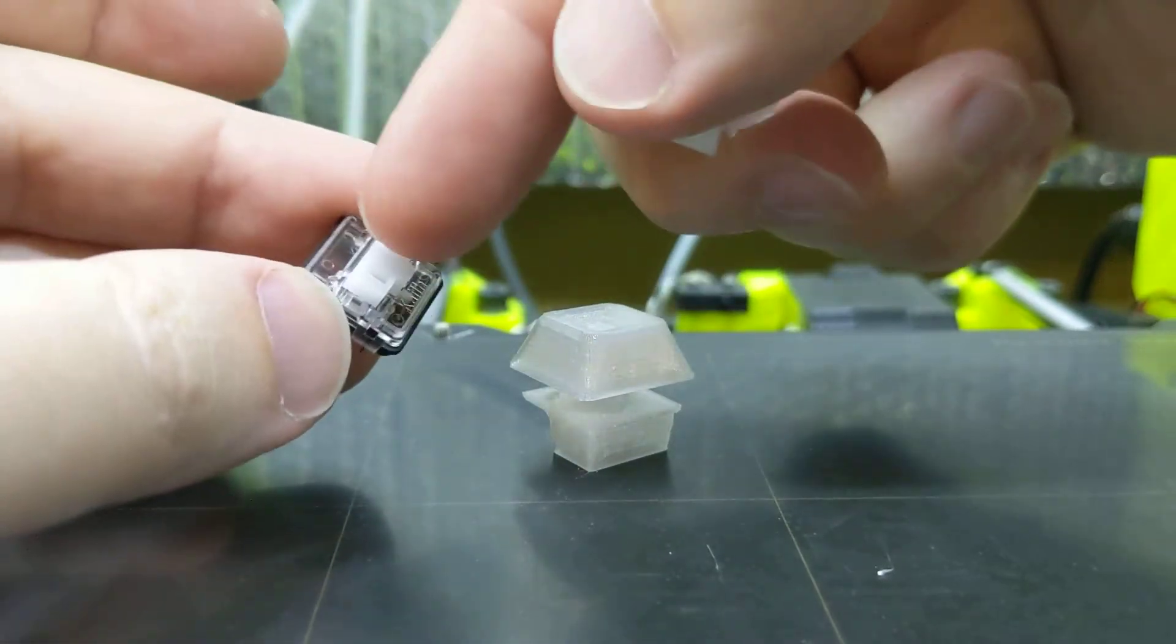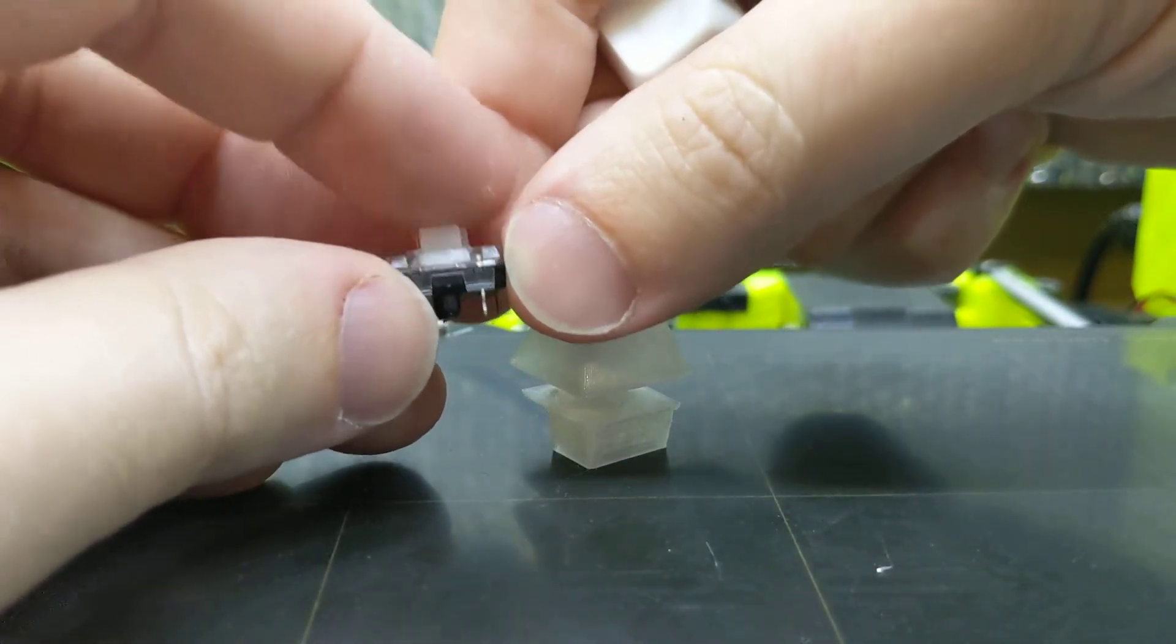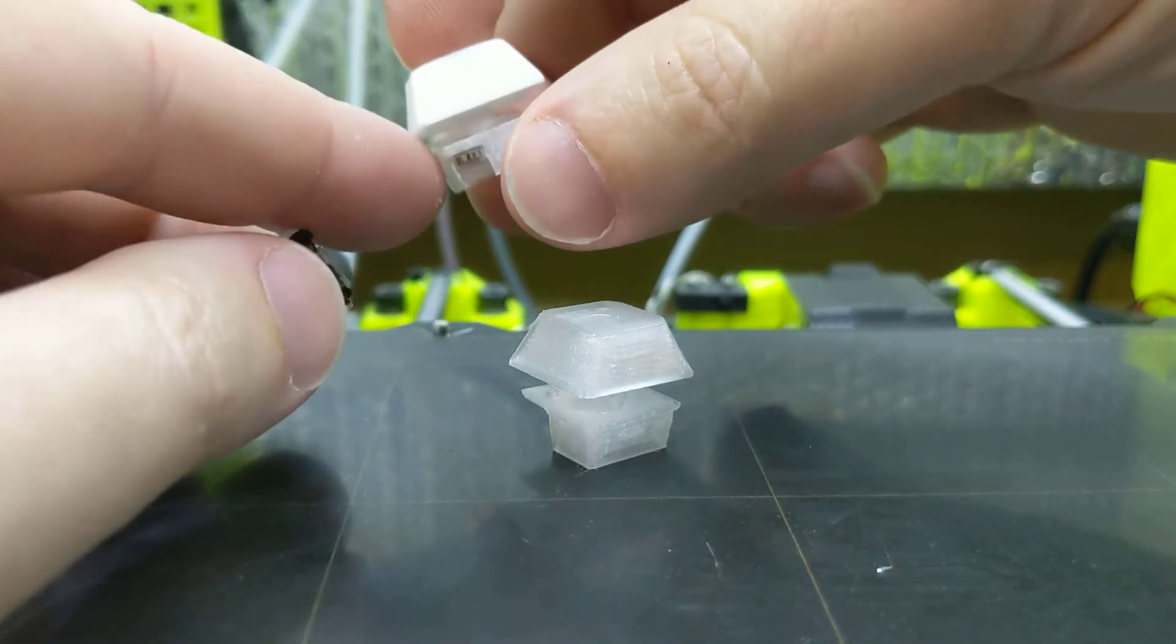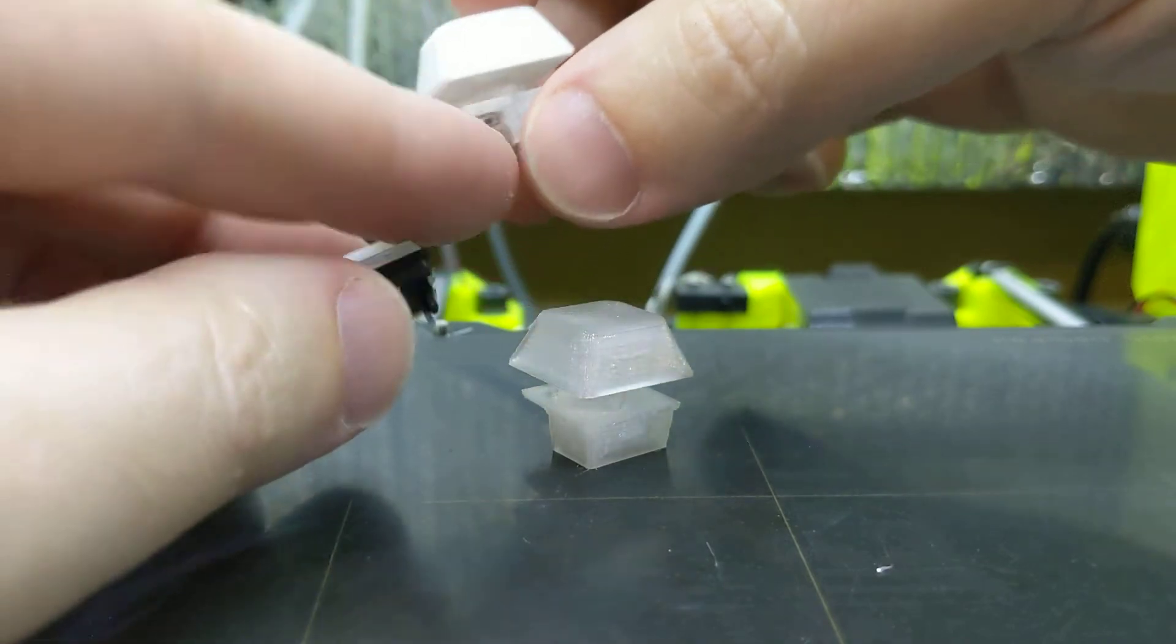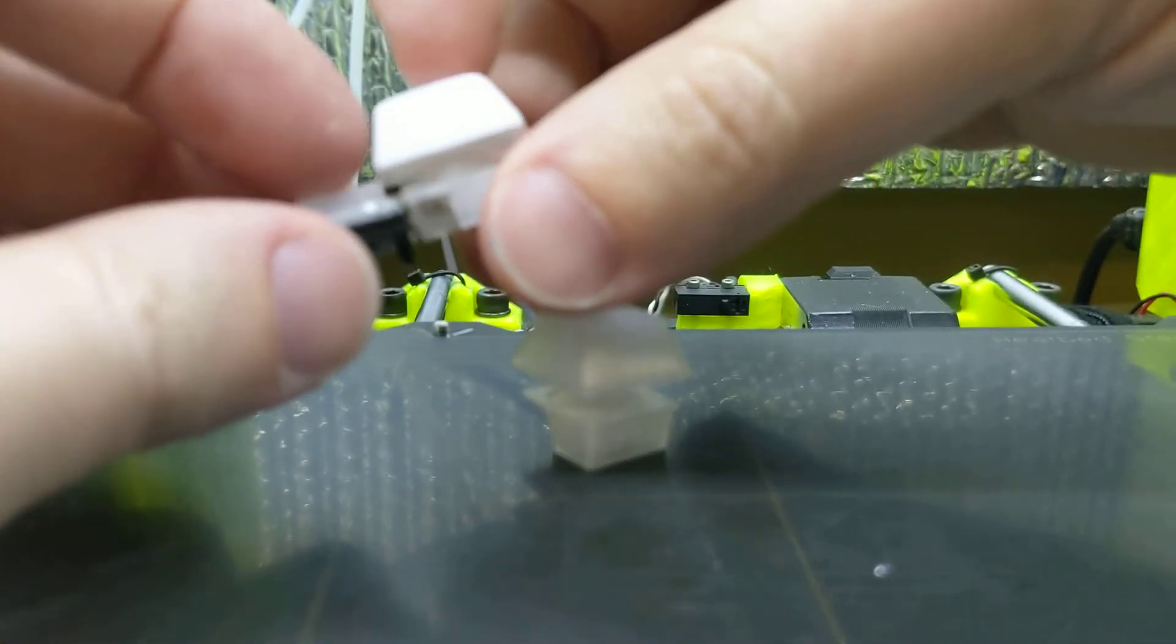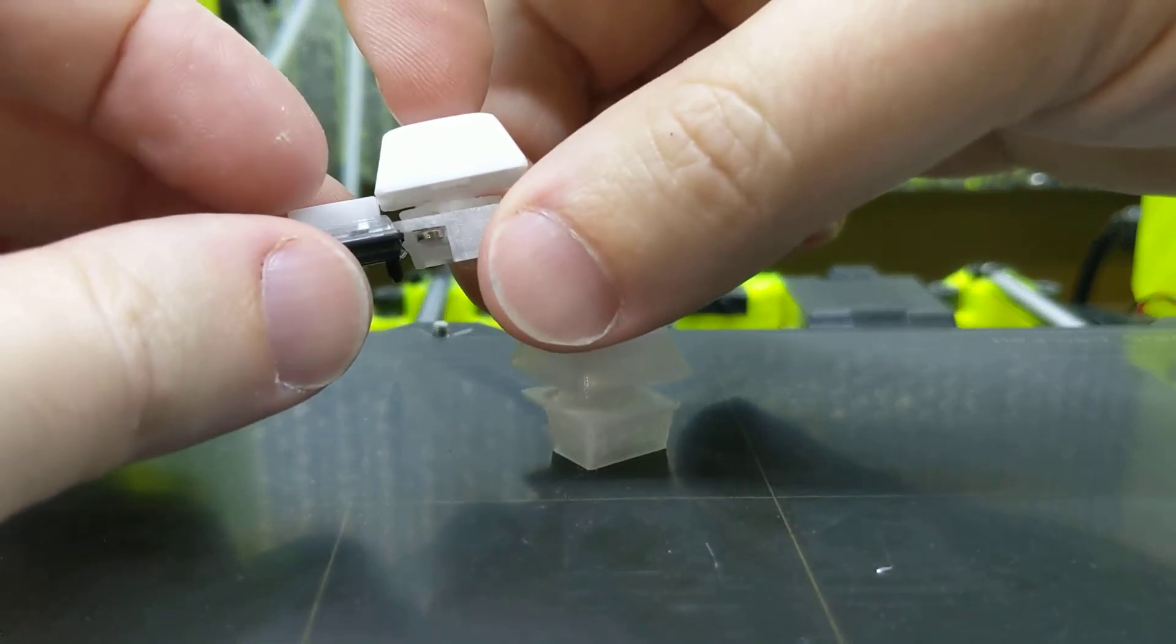So this is a KL choc white, which has, I believe, three millimeters of travel. But the smallest choc you can get is actually 2.4 millimeters. So this switch right here is actually 2.4 millimeters of travel, and it's about the same under the plate as a choc.